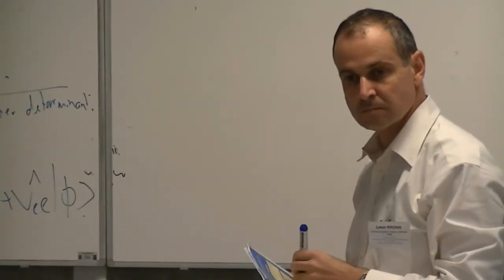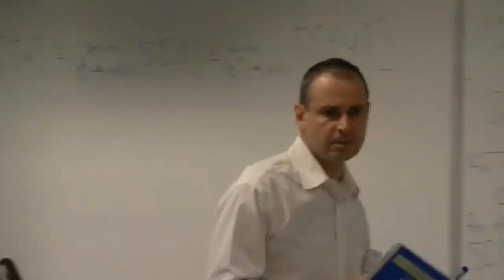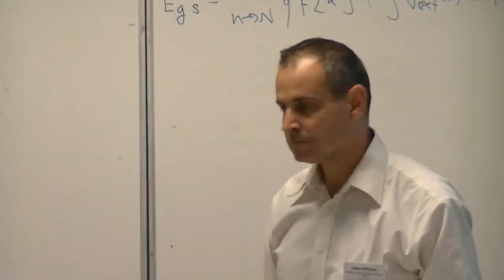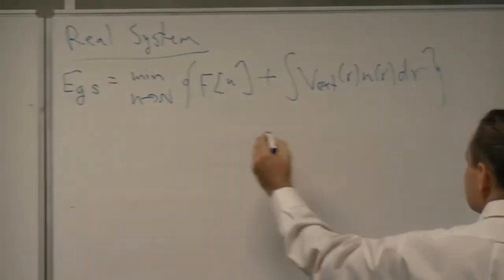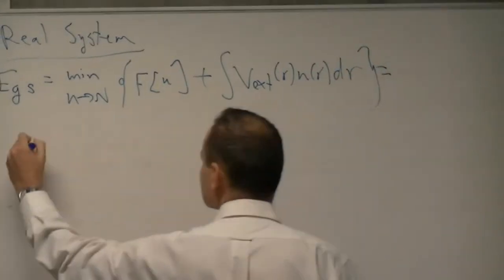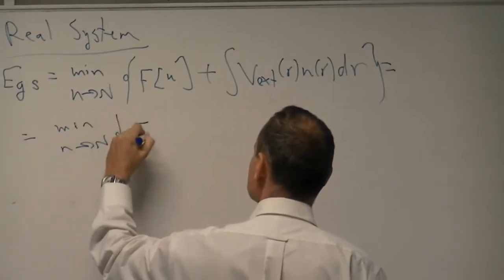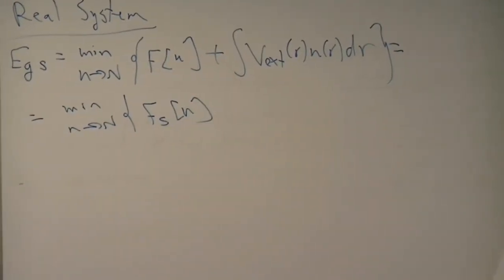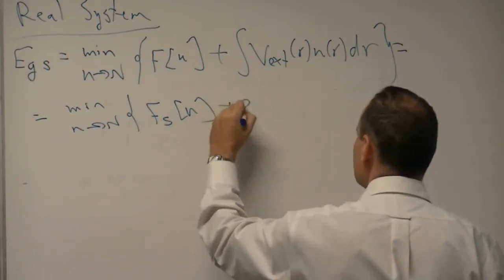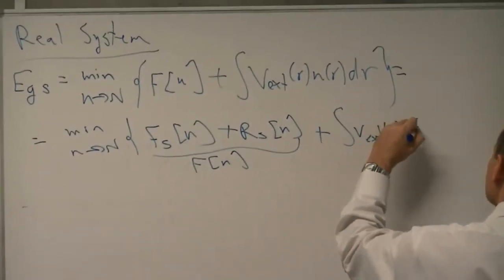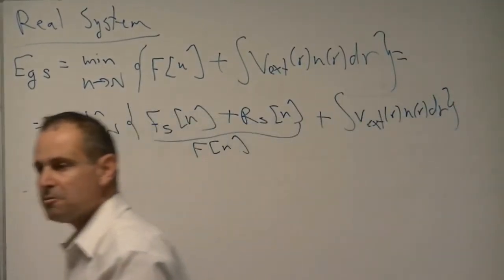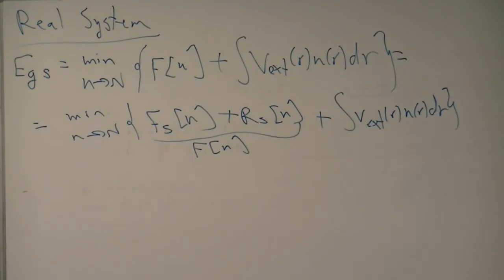Step one: we rewrite the real-system functional by separating F of n into two parts. The first part is F_S, which we defined using the constrained minimization. The second part is R_S — R stands for remainder — and together they equal the original F of n. Now in the model system, I minimize only over F_S of n, tossing out R_S of n. That's why I call it a partially interacting system: I kept some interaction energy but not all of it.